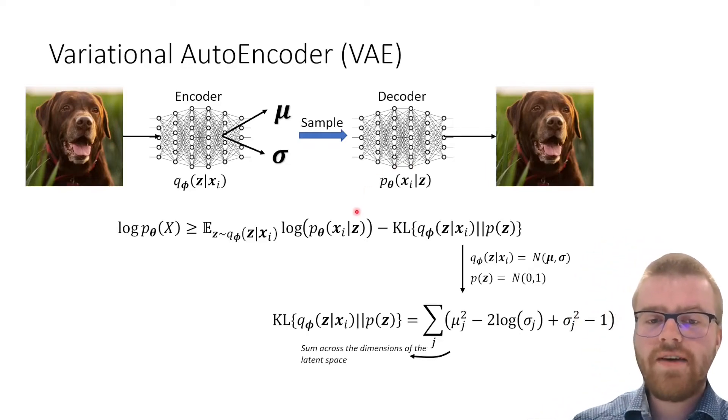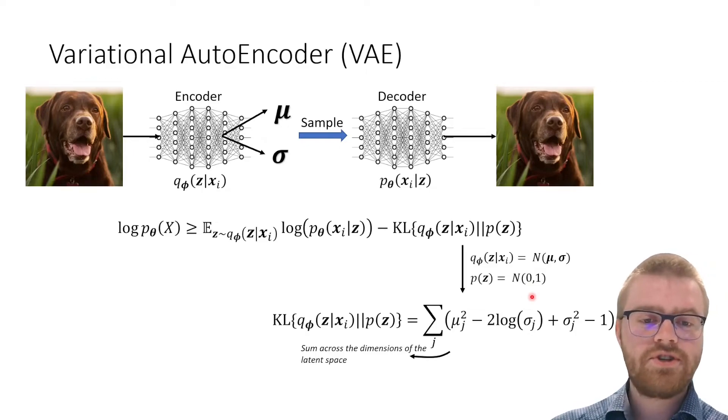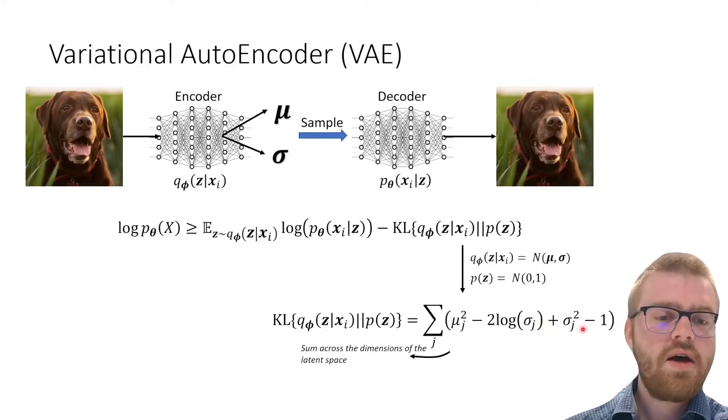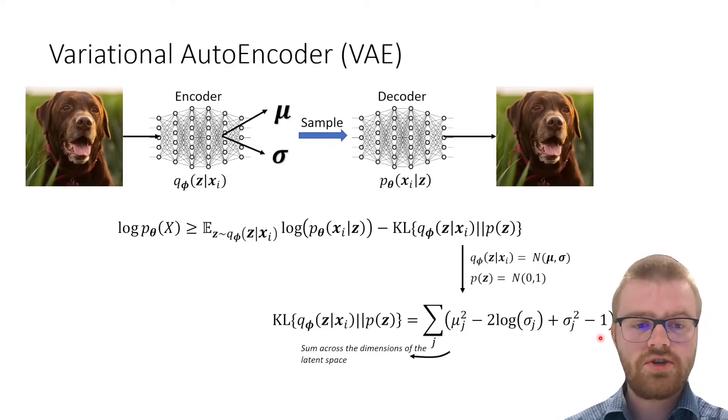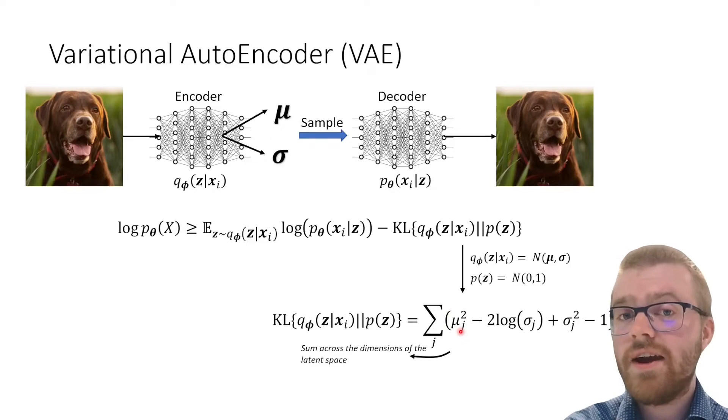Now we can actually write out what this KL divergence is. If our encoder outputs a normal distribution with mean μ and variance σ, but we want that to follow a zero and one normal distribution, the KL divergence actually has an analytical form. It's the summation over mean squared minus two log of the standard deviation plus the variance minus one.